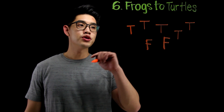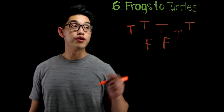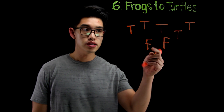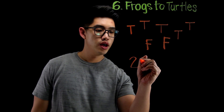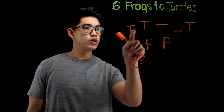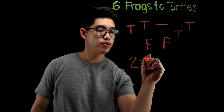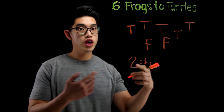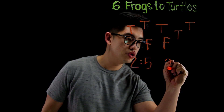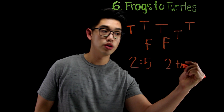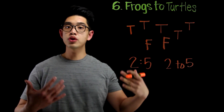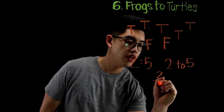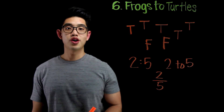Alright, for number 6, I want to find the ratio of frogs to turtles. I see that there are 2 frogs, so I can write 2. And there are 1, 2, 3, 4, 5 — 5 turtles. So my answer is going to be 2 to 5. If you don't want to write the ratio that way, you could also write it as 2 with the word 'to' 5. Or you can write a ratio as a fraction and write 2 over 5. And these are your answers.